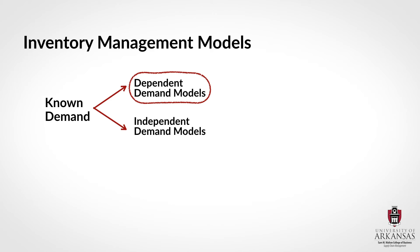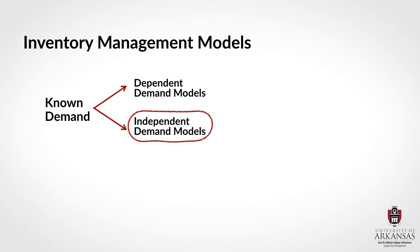Besides dependent demand models, there is a second group of known demand models called independent demand models. These models apply when we make inventory decisions for products whose demand levels are independent of demand for other products or at other stocking locations. You may be familiar with the economic order quantity model, or EOQ — this is a great and well-known example of an independent demand model, and we will review this model in another lecture.